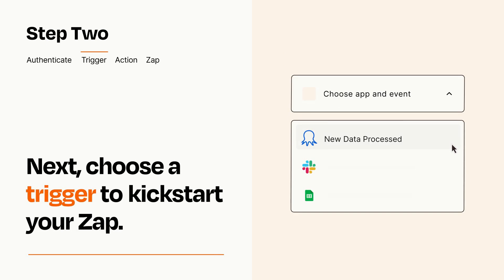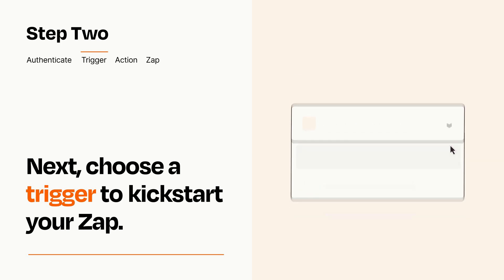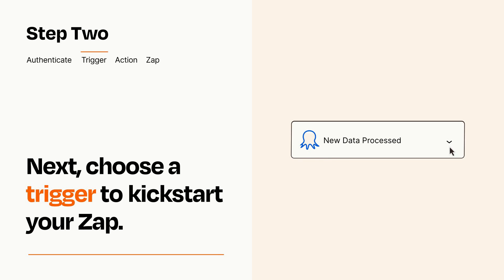Now let's set up your trigger, which is the event that starts your Zap. Pick the trigger event that you want from the list. When you set up this step, your Zap will pull in test data from your trigger app that you'll see later when setting up your action app.